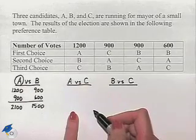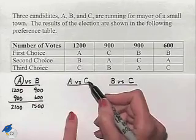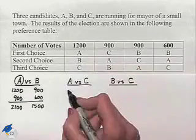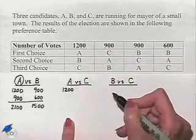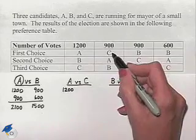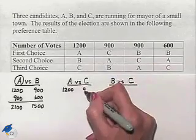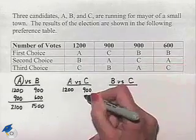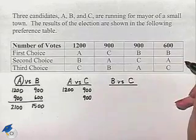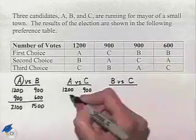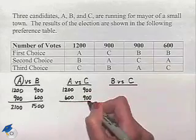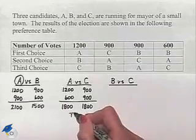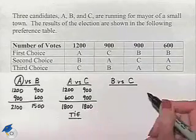Now let's go to our next pairing, A versus C. We use the same procedure again. A is going to be ranked above C in our first column of votes and so we're going to have 1,200 going to A. In our second column of votes we have C ranked above A so we're going to apply the 900 votes to C. In our third column C is ranked above A. The 900 votes will go to C. In our last column A is ranked above C and so the 600 votes go to A. Adding gives us 1,800 for A and 1,800 for C which means we end up with a tie. We'll come back to that.